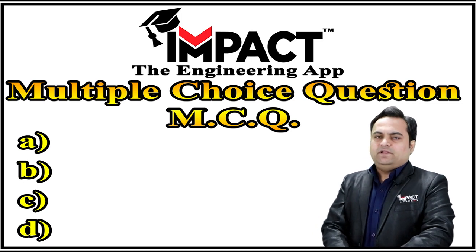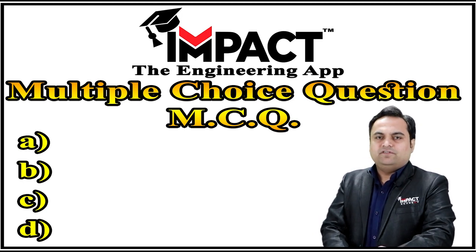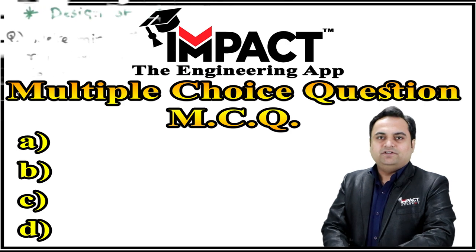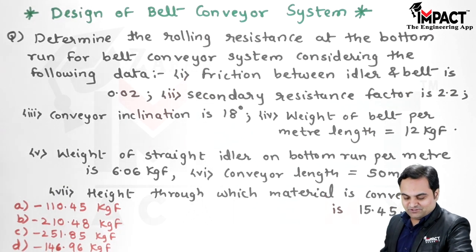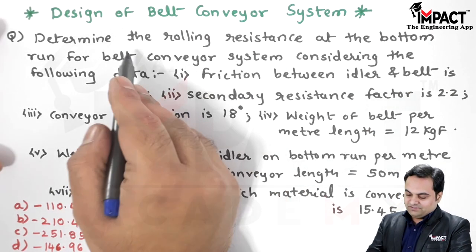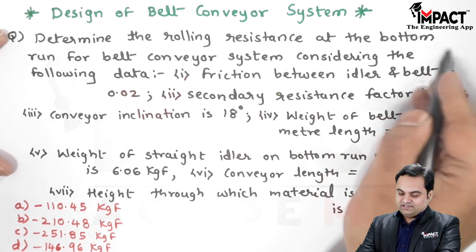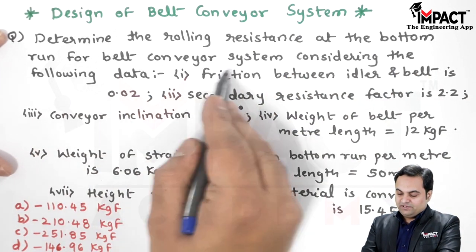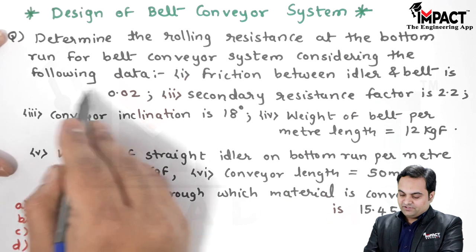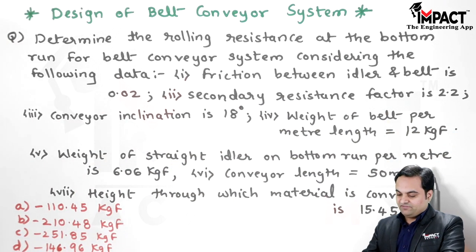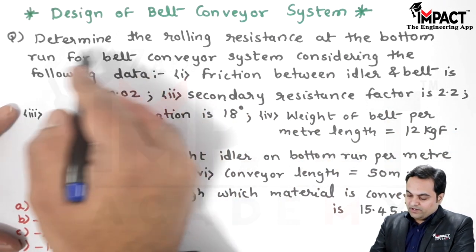Hi friends, here in this video I'll be explaining the MCQ on belt conveyor system. So let's get started. Now here is the question in front of us: determine the rolling resistance at the bottom run for the belt conveyor system considering the following data.